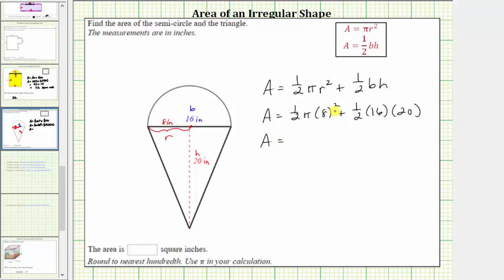Simplifying, 8 squared is equal to 64, 1/2 times 64 is equal to 32, and therefore the area of the semicircle is 32 pi square inches. And then we have plus 1/2 times 16 is eight. Eight times 20 is equal to 160. The triangle is equal to 160 square inches.